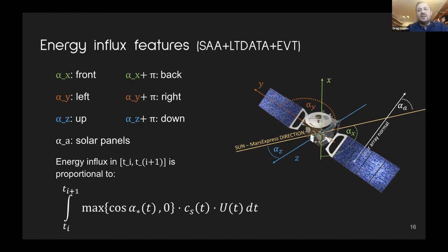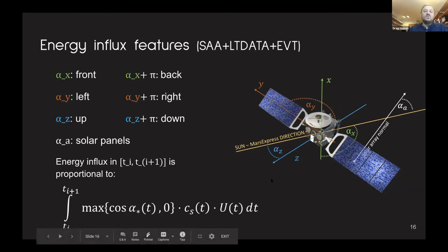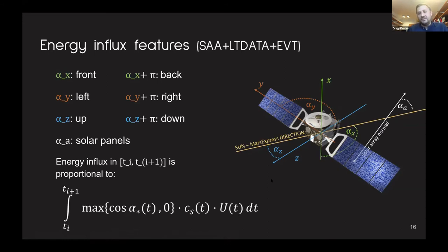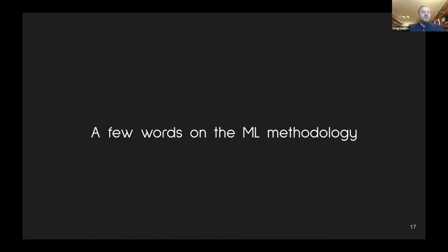I'll briefly illustrate the kind of feature engineering we did. This is perhaps the most influential set of features: energy influx features that use three groups — solar aspect angles, long-term data, and other events. It shows Mars and its coordinate system. This type of feature measures the amount of energy that the solar panels are receiving at a given moment. It also takes into account the umbras and penumbras of MEX given Mars. As I said, we are focused on explainable AI — we want domain experts to understand the models or the predictions being made.